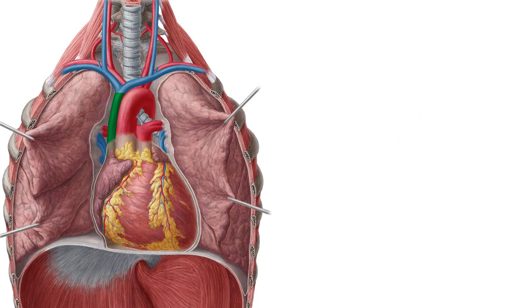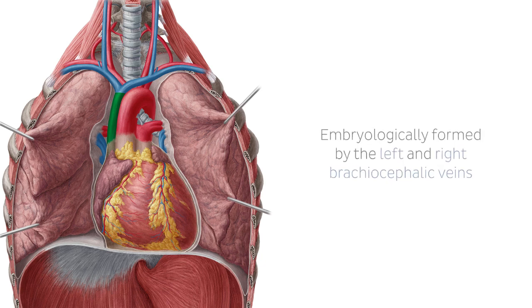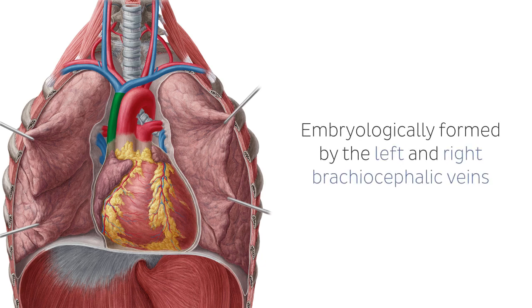Embryologically, the SVC is formed by the left and right brachiocephalic veins, sometimes called the innominate veins, which also receive blood from the upper limbs, eyes, and neck.